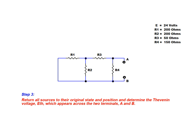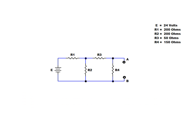Once the Thevenin-equivalent resistance has been determined, we move on to step 3 and find the Thevenin-equivalent voltage, ETH. First, we return all sources in the portion of the network to their original position and state. We then determine the value of ETH by calculating the voltage that appears across the two terminals labeled A and B. In this example, it can be seen that the voltage appearing across the two terminals will be equal to the voltage across R4.